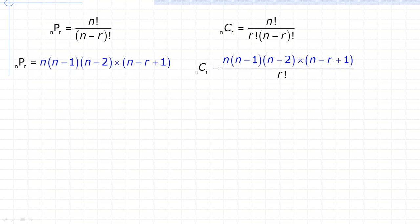Now, a shortcut for evaluating combinations when numbers are reasonably small. The permutation formula nPr can be expanded as n × (n−1) × (n−2) × ... down to (n−r+1), with r factors total. For combinations, the shortcut is the same product in the numerator, but also divided by r factorial in the denominator. This shortcut is useful to avoid computing large factorials.